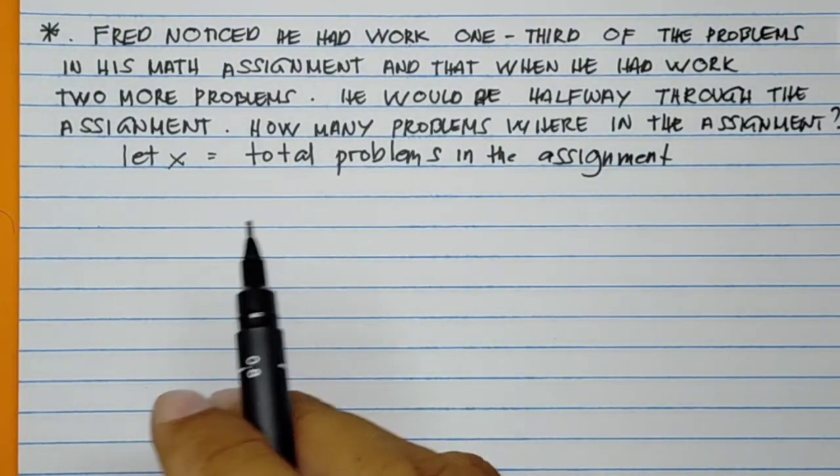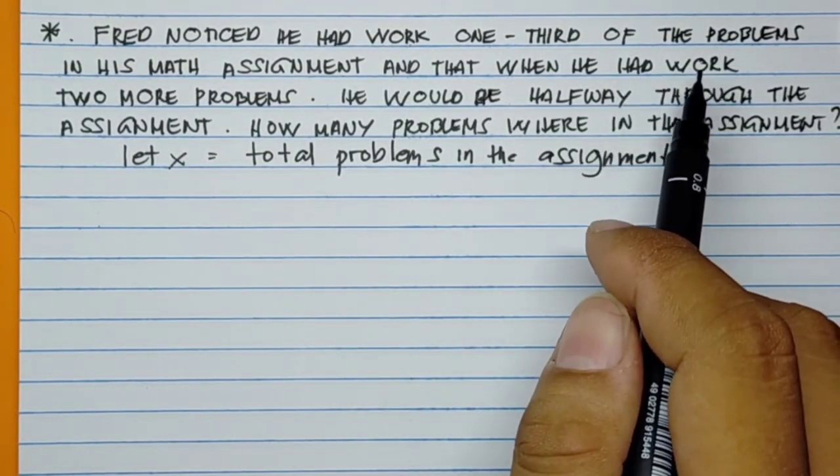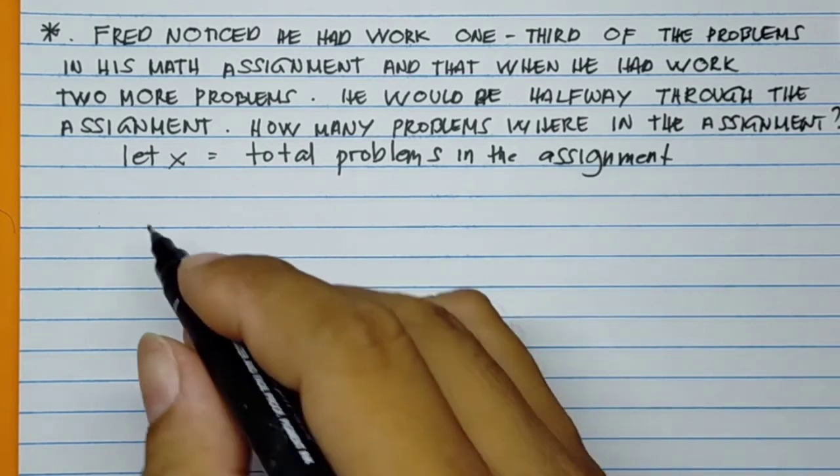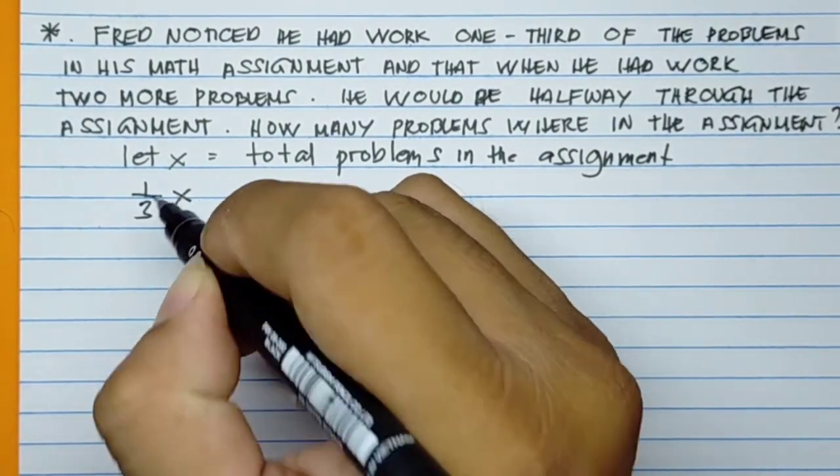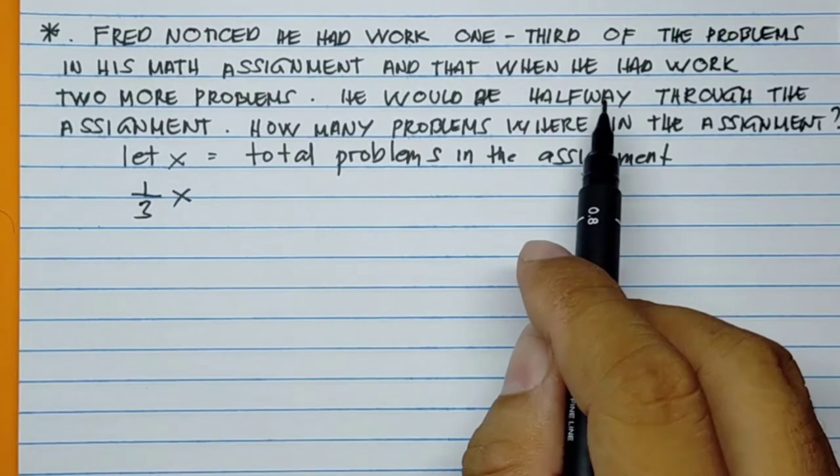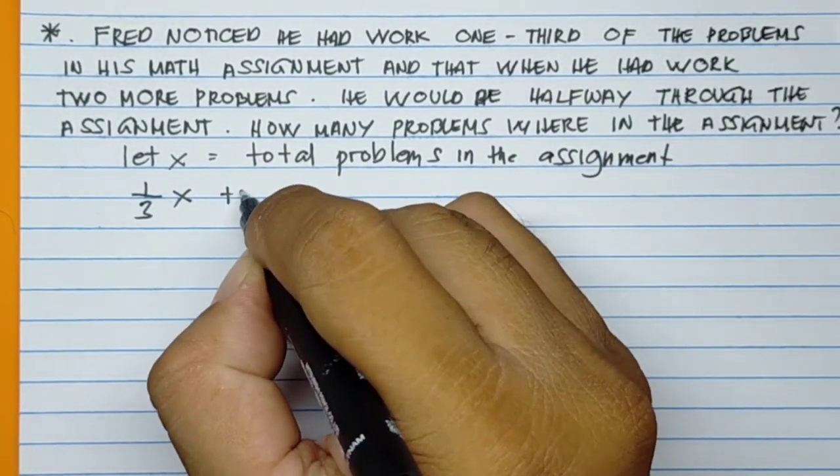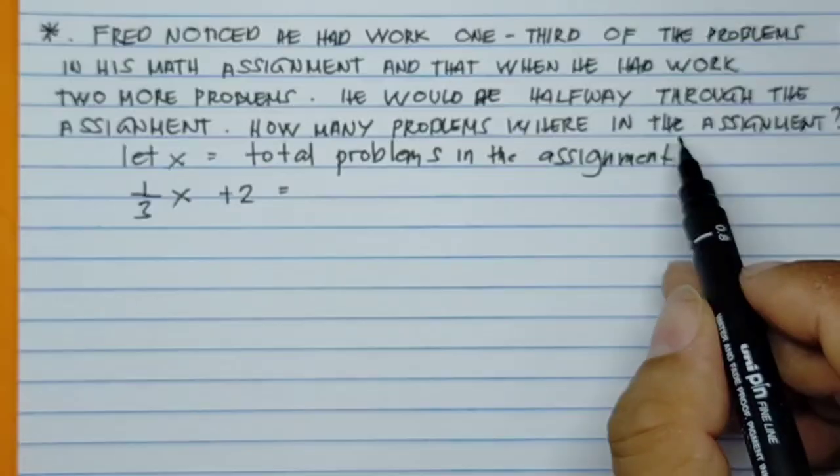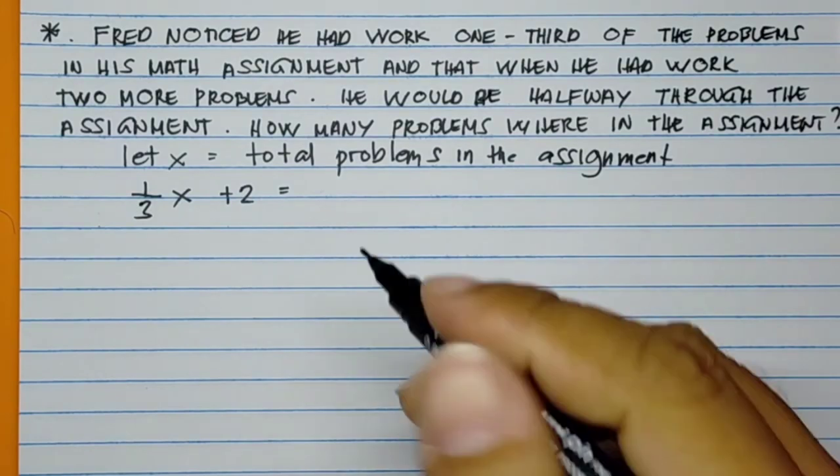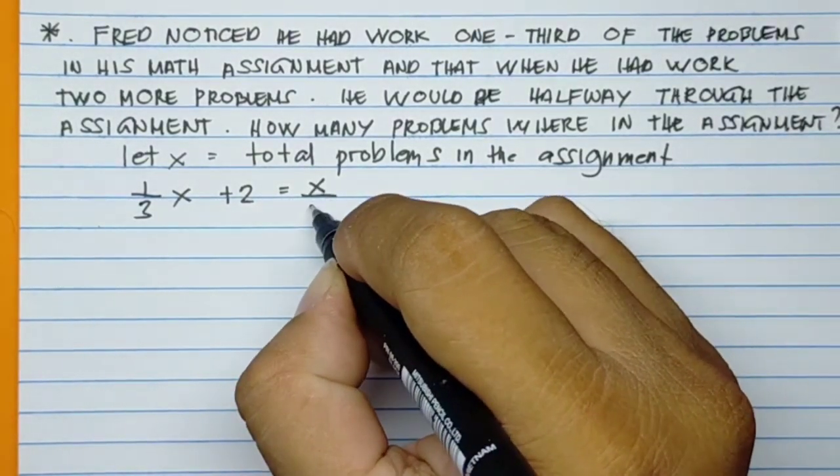So therefore, the equation will be, it says here, one-third of the problems in his math. So one-third of X. And that when he had worked two more problems, so that will be plus 2. So it means he will be halfway. So when you say halfway, that will be X over 2.